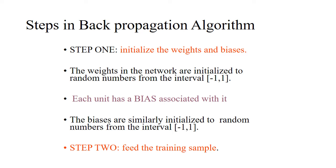As we have seen in the last class, the weights should be taken randomly. We will start with random weights. After that, the weights will be updated in each iteration such that the error should be reduced. The weights in the network are initialized to random numbers from the interval of minus 1 to 1.